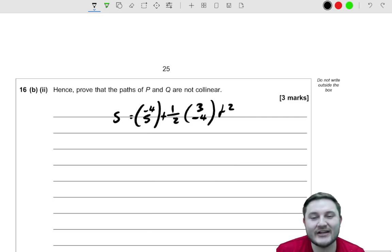Now, to prove something, basically collinear means they run on the same line. And remember, this is the positional equation in terms of T for P. However, if P and Q are collinear, which is what we're trying to prove, then we should be able to sub in a positional vector from Q in place of S, and we should get a T value that works, if they are collinear.